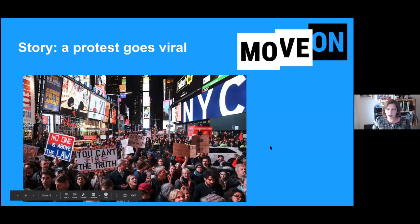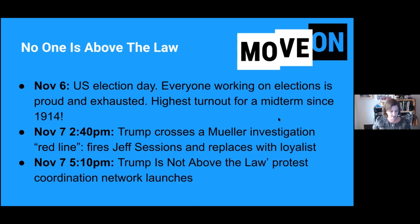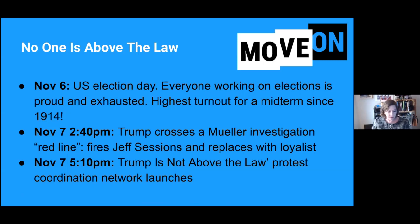I want to tell you a story about a moment that in the progressive movement we're all really proud of — it's also a story about the influencer economy. In 2018, MoveOn and a handful of other organizations banded together and created a coalition called No One Is Above the Law to protect the ongoing Mueller investigation from tampering or being undermined. Red lines were identified — actions that if the Trump administration took them, we'd immediately protest in response. By November 2018, over 500,000 people had pledged to protest if any red lines were crossed.